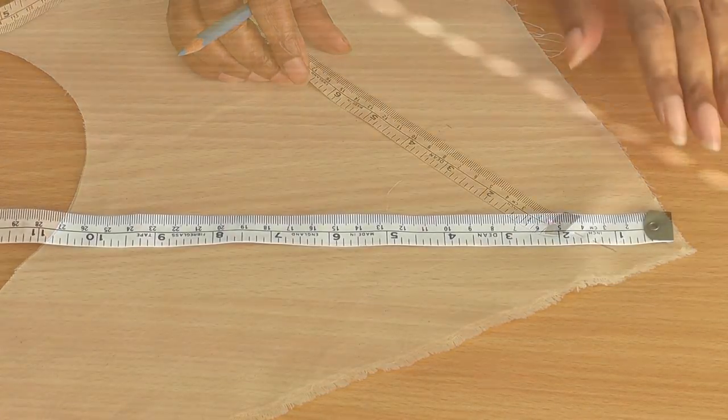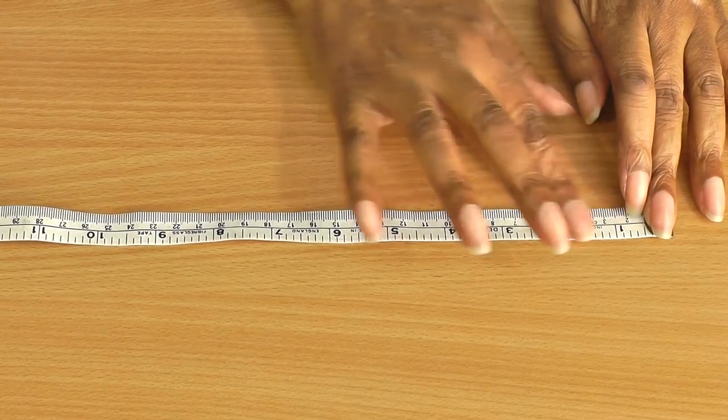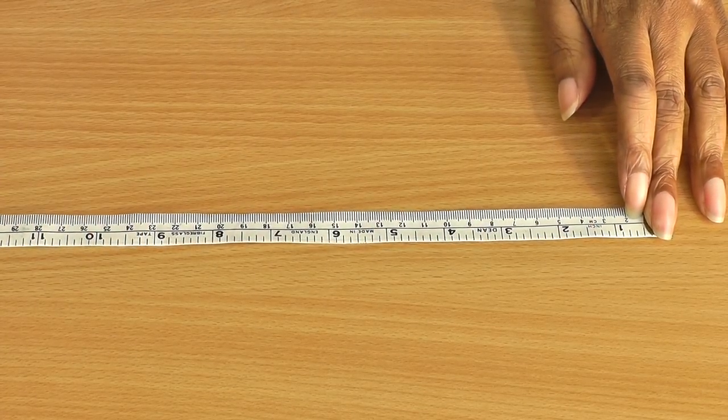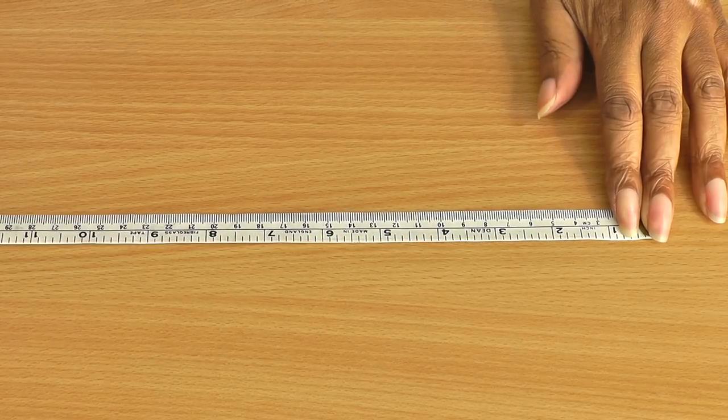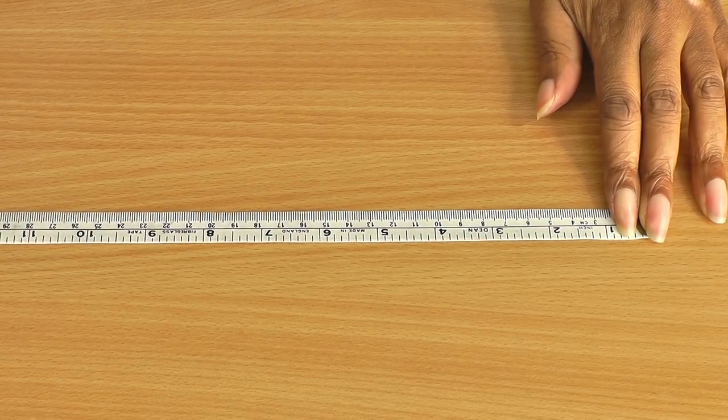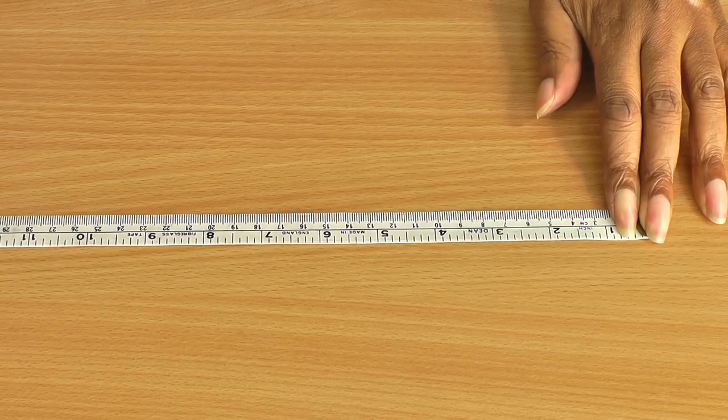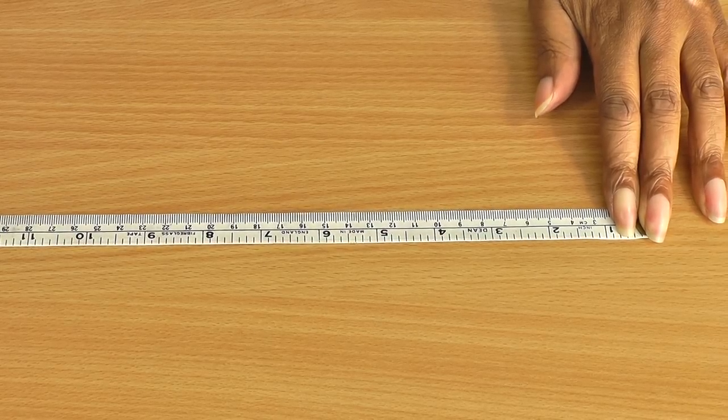Whenever you are using a tape measure, always make sure it is straight because as I said earlier, it is a ruler. So you need to make sure that whenever you measure anything that you're not pulling it too tightly, but it's slightly taut.